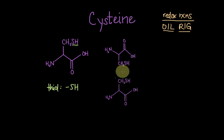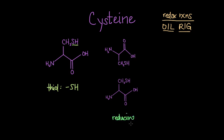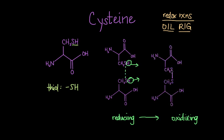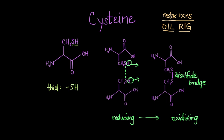Going back to our two cysteines — if you look closely at their side chains, the thiols are existing in reduced form, so you'll find these thiols in a reducing environment. Now say those cysteines end up in an oxidizing environment. In that case, you would see the loss of the hydrogens and then the formation of a bond between the two sulfur groups — this is the disulfide bridge. Whether cysteines go solo in separate thiol form or form disulfide bridges depends on the environment around them.